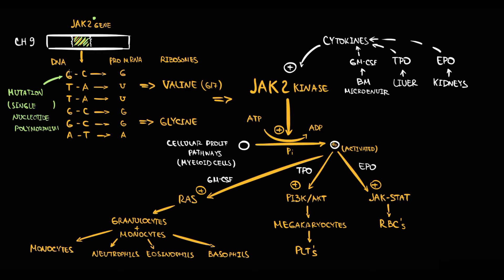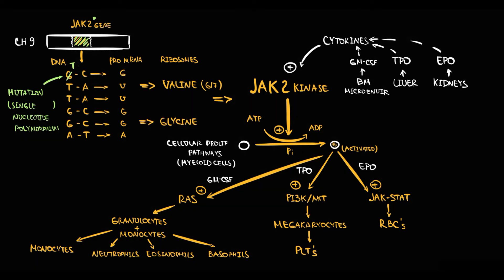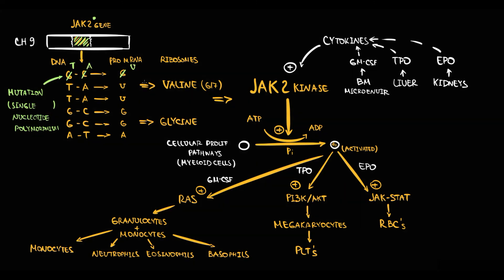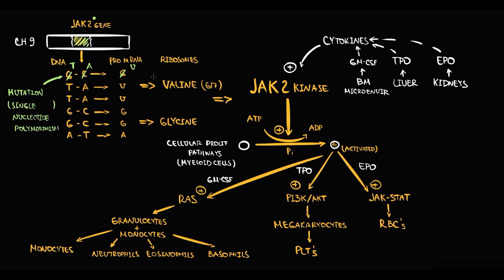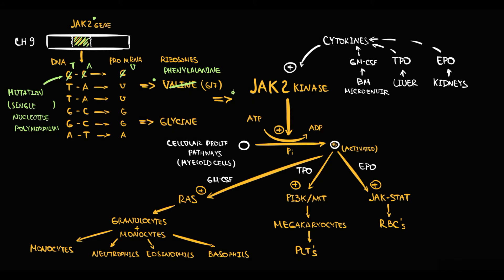In the DNA molecule, due to a single nucleotide polymorphism, guanine is substituted by thymine. Thereby, on the non-coding strand there will be adenine, and in the mRNA molecule there will be uracil. Now the triplet of three uracils encodes not valine but phenylalanine, which is a totally different amino acid. So this mutation in the DNA molecule results in production of a JAK2 kinase that has phenylalanine at position 617.